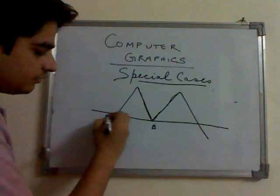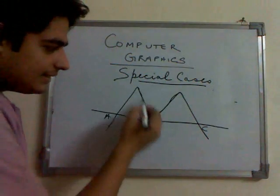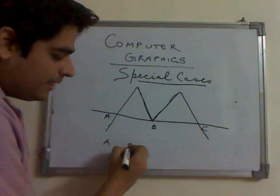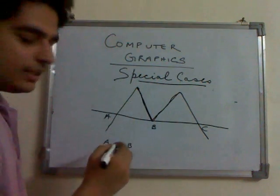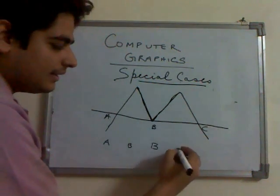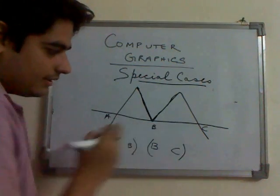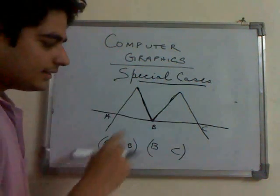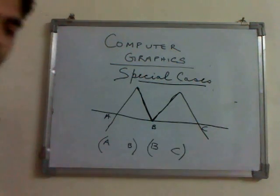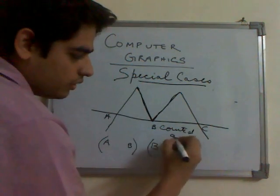What we are calculating is the intersection of the scan line with the edges. There will be point A, there will be point B because the scan line is intersecting with one edge, and then again a point B as the scan line is intersecting with this other edge, and then point C. So there will be two pairs: A-B and B-C. We have to take two intersections at this point to make an even number of intersections: A, B and B, and C. So this point has to be counted as two intersections.